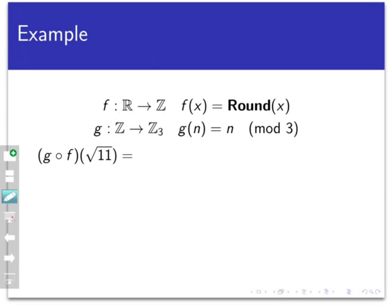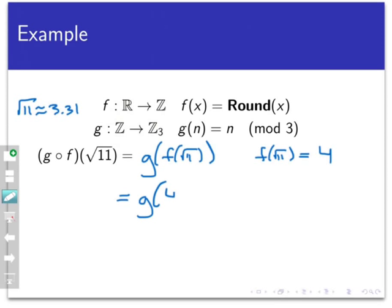The definition of g circle f says that the function operates as follows. Given a real number x, g circle f is defined to be g of f of x. That means if I'm given an x as an input, remember x is a real number here, I'm first going to run x through f and get some output. And then I'm going to run that output through g to get a second output, that's my final answer. For example, if I start with square root of 11, that's about 3.31. Then g circle f of square root of 11 is defined to be g of f of square root of 11. So first I would calculate f of square root of 11. That would be the round of square root of 11, which is 4. Then I'm going to take that output, 4, and evaluate it into g, and g of 4 is equal to 4 mod 3, which is 1. So g circle f of square root of 11 eventually equals 1.